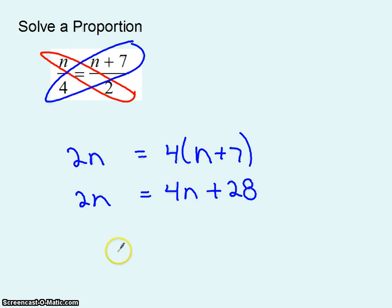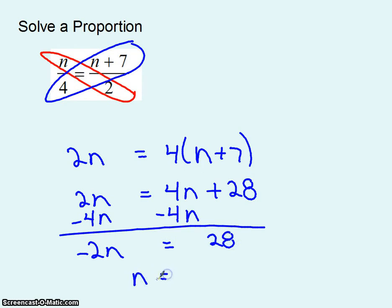And now I simply have an equation to solve. I use the distributive property. I've noticed that all of the non-n's are on the right side so I'll get rid of n's on the right side by subtracting. That gets me negative 2n equals 28. Dividing by negative 2 on both sides gets me negative 14. And there's my answer. I hope that was a good introduction to solving proportions.